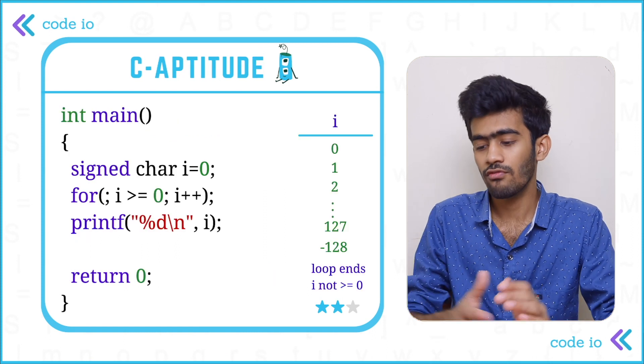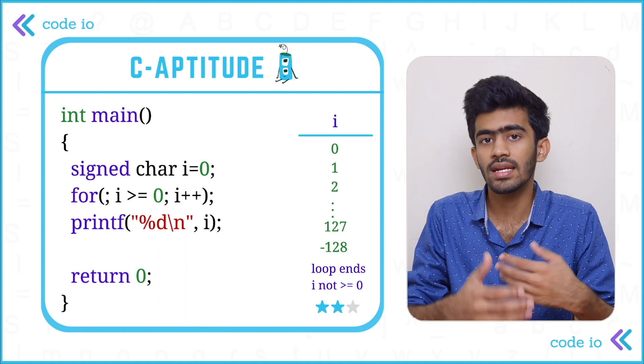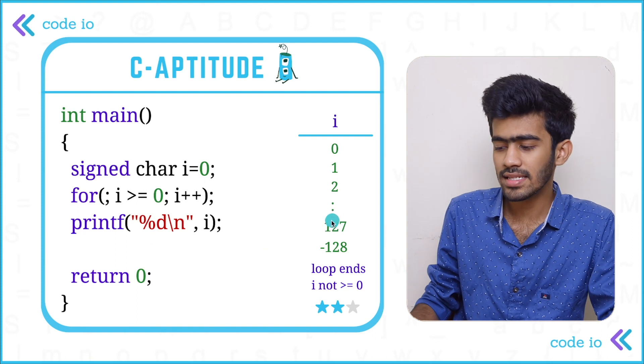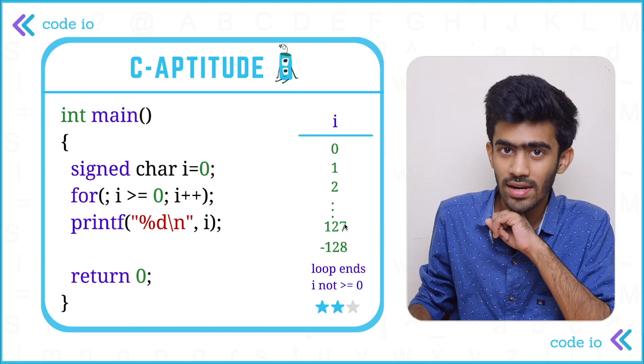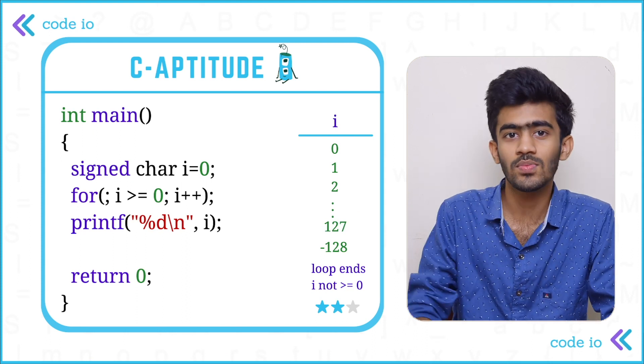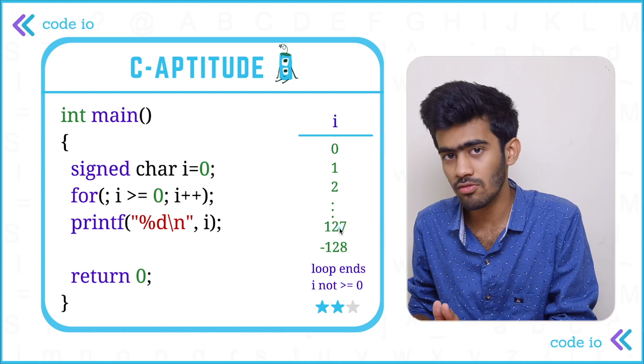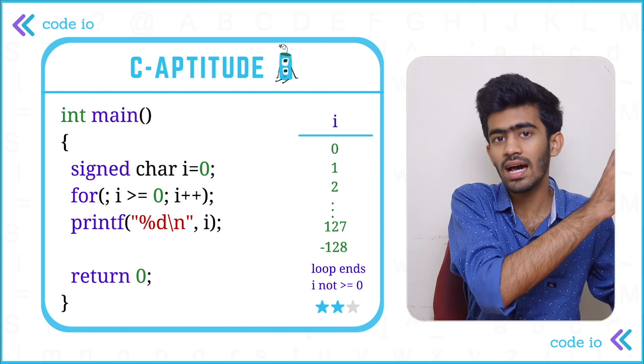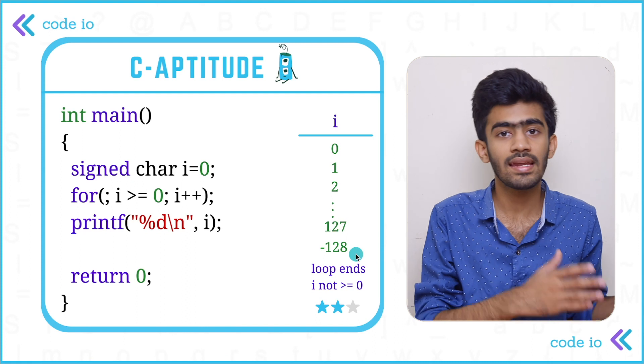So in this for loop, as we can see here, it starts from 0 and goes on iterating. i is equal to 1, i is equal to 2, it goes on incrementing till it reaches the maximum value which is 127. When it reaches 127 it will be incremented by 1, still because the condition is true - it is greater than or equal to 0. When it is incremented by 1, since it is the maximum value, it will just move on to the minimum value. That is, it will move on to the other end. So 127 will go to the other end which is minus 128.